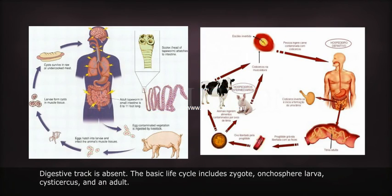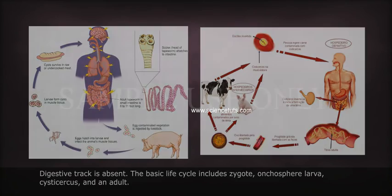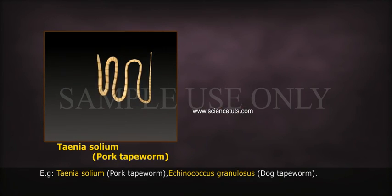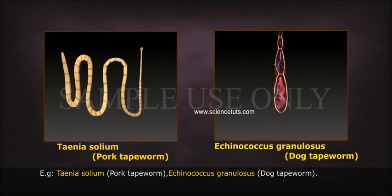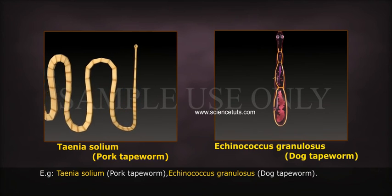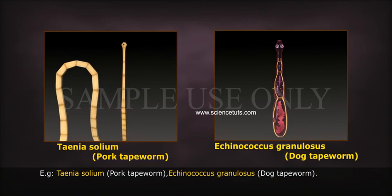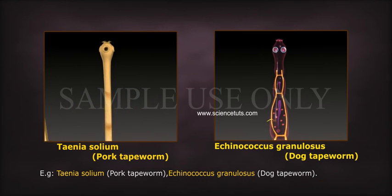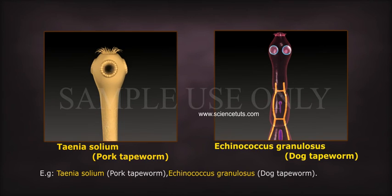The basic life cycle includes: Zygote, Onchosphere larva, Cysticercus, and an adult. Examples: Taenia solium (pork tapeworm) and Echinococcus granulosus (dog tapeworm).